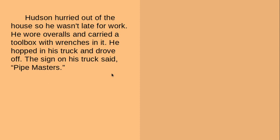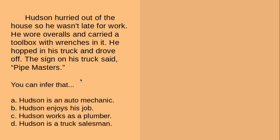Here's the next one. Hudson hurried out of the house so he wasn't late for work. He wore overalls and carried a toolbox with wrenches in it. He hopped in his truck and drove off. The sign on his truck said 'Pipe Masters.' You can infer that: A, Hudson is an auto mechanic; B, Hudson enjoys his job; C, Hudson works as a plumber; or D, Hudson is a truck salesman. Pause the video, underline evidence on your paper copy if you have it or read it aloud from the screen, and don't forget to say how you know by talking about your background knowledge.